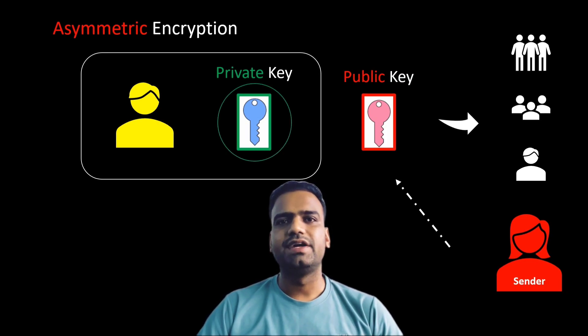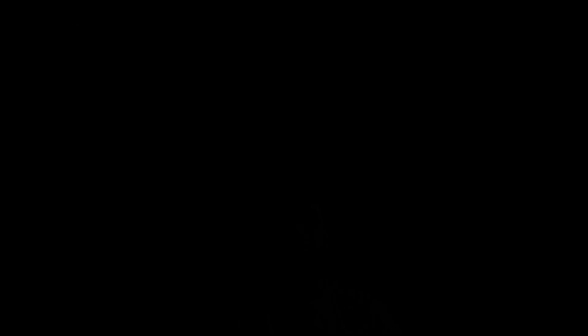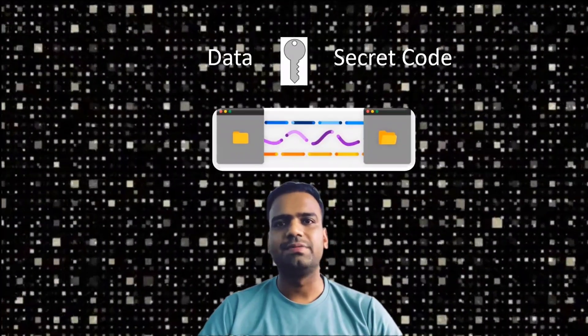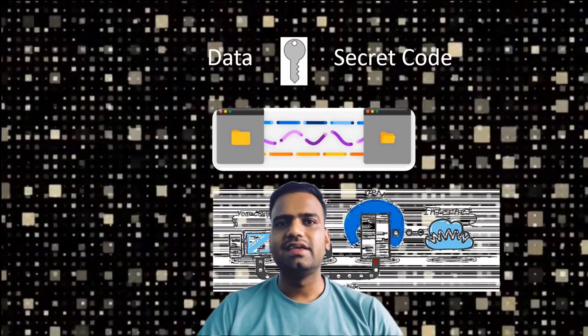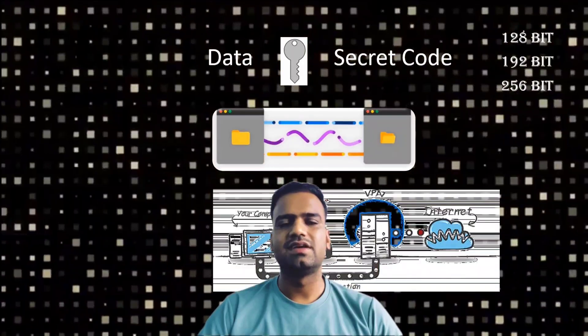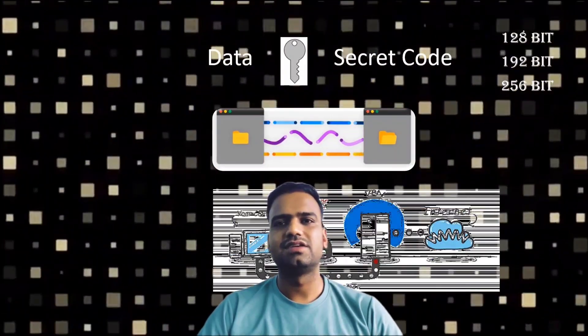Let's go deeper into how this works. In symmetric encryption, both the receiver and sender have the same key and use it for encrypting and decrypting messages. AES — Advanced Encryption Standard — is a popular type of symmetric encryption which uses a single key to turn your data into a secret code. It is used for things like secure file transfers and VPNs. The AES key can be of different lengths, from 128 to 256 bits, making it versatile for different security needs.